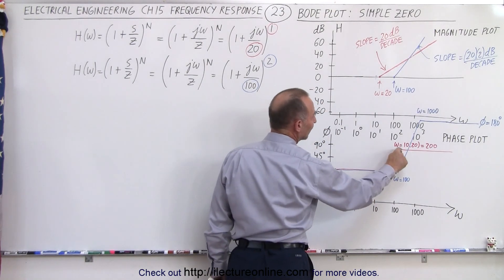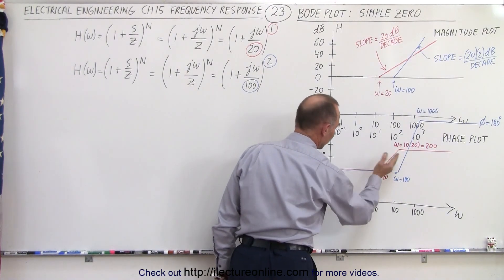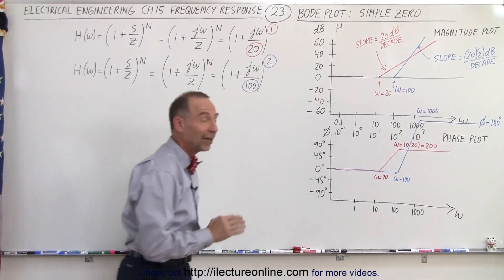So we reach a phase angle of 90 degrees by the time we reach omega being 10 times the original value when we diverge from the zero slope on the phase angle.